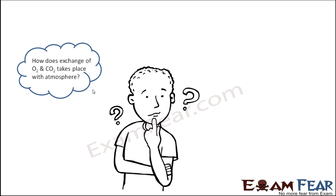So now a few questions that might be bothering you. How does this exchange of oxygen and carbon dioxide take place with the atmosphere? We are saying that oxygen has to come inside your body and carbon dioxide has to come out of your body. So basically the exchange of these two gases sounds quite complex. So how do we do that?